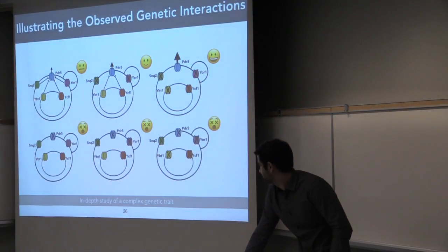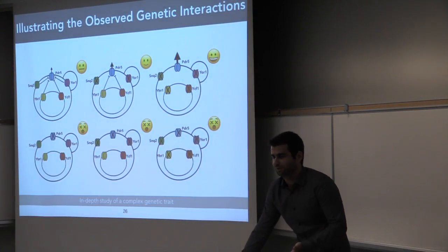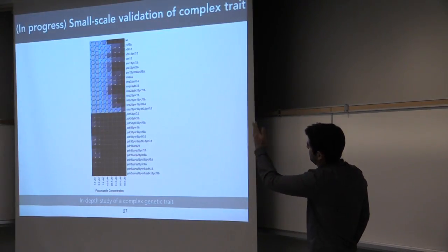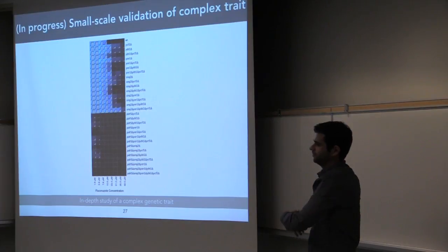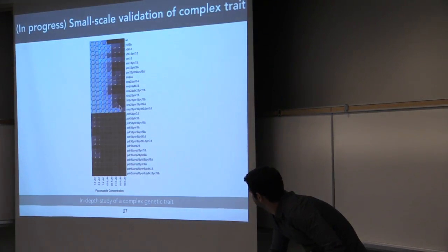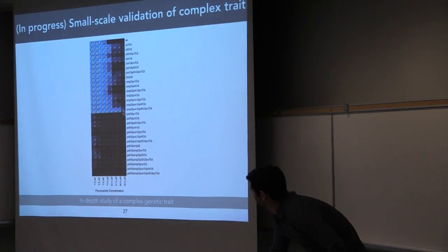And if PDR5 is absent, then you're dead no matter what. This is our small-scale validation. It's already in progress. Well, it's in progress because we only have N of one so far. But what you can see here is that under intermediate concentrations or high concentrations of proconazole, that the four knockout is indeed more resistant than any other combination.